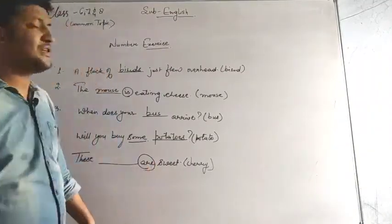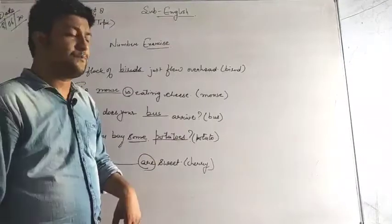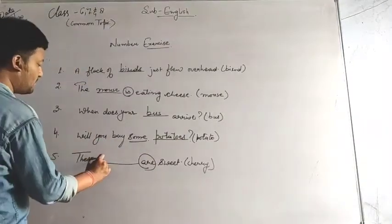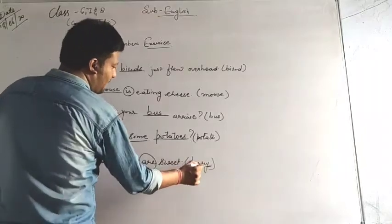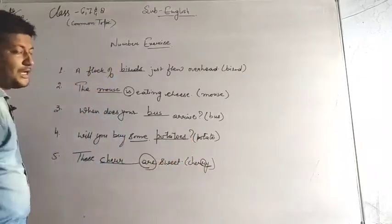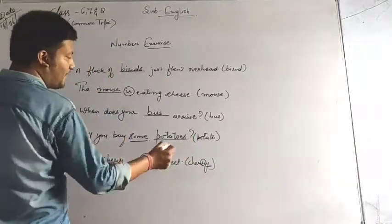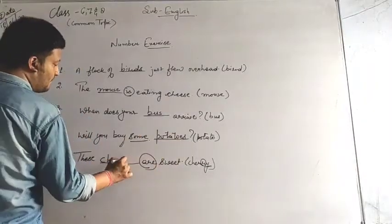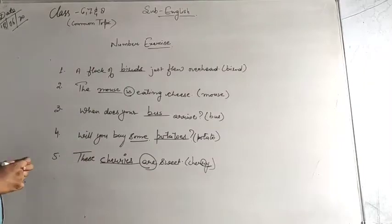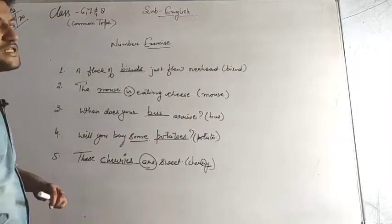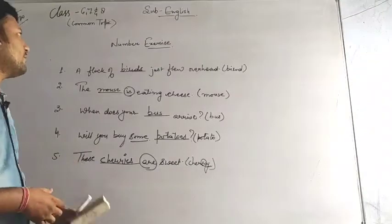Last one: these are sweet. Here 'are' is given, this definitely is plural. So what is the - C-H-E-R-R. Now Y is there and before Y there is a consonant R, so when it is there I replace my Y with I-E-S and it becomes cherries. So these are the answers which I have given you for the homework.